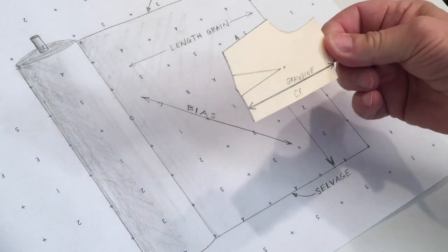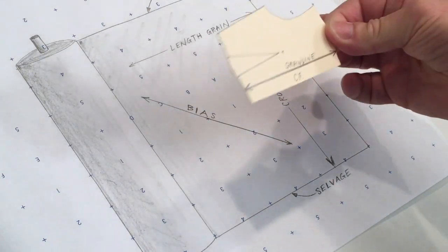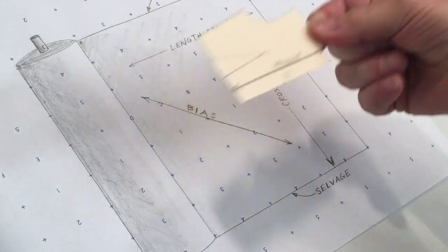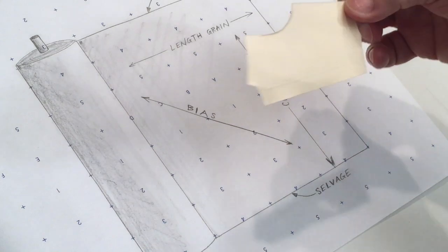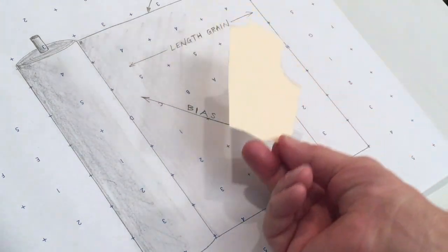The purpose of a grainline is to tell us how to place the pattern onto the fabric. You see, without a grainline we have no idea how to place this pattern onto this fabric.